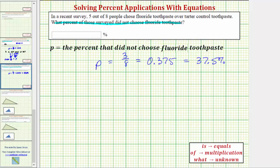So now we know thirty-seven point five percent of those surveyed did not choose fluoride toothpaste. Another approach to solve this problem would be to write a more traditional percent equation by answering the question, three is what percent of eight?